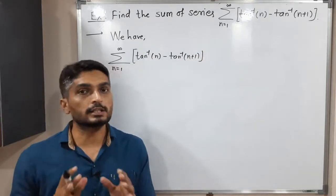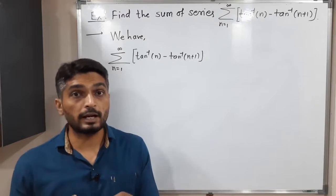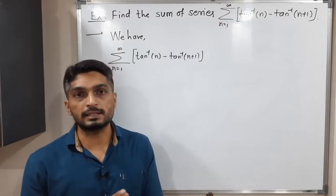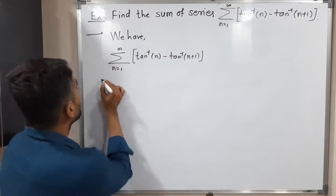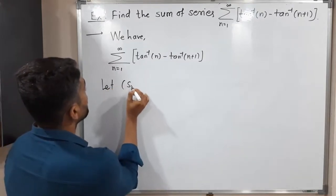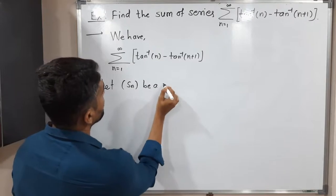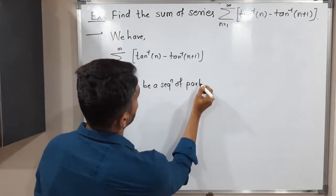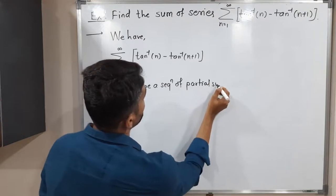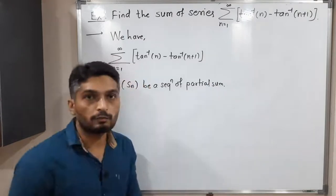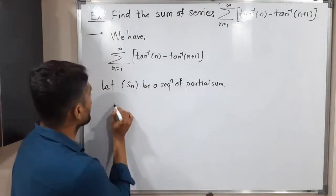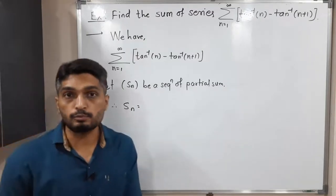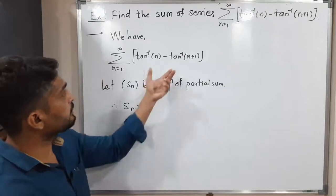What will I do? We will consider a sequence of partial sums and we will try to find the limit of that. So let SN be a sequence of partial sums. So you are familiar with that — how to find a formula of SN. Therefore SN is equal to, we get SN by adding the first n terms of the series.